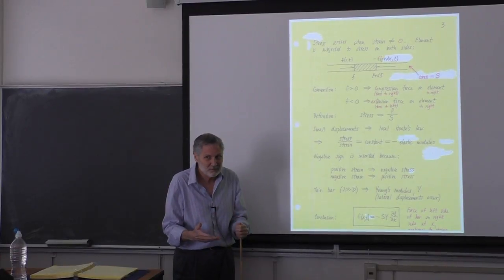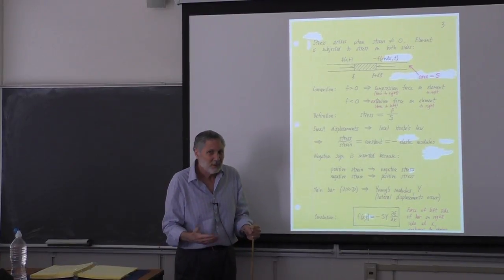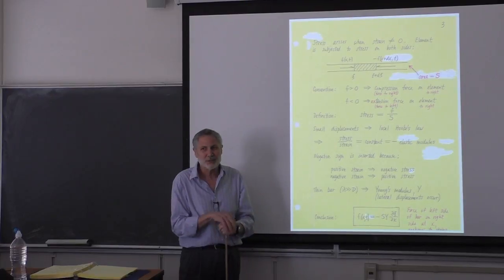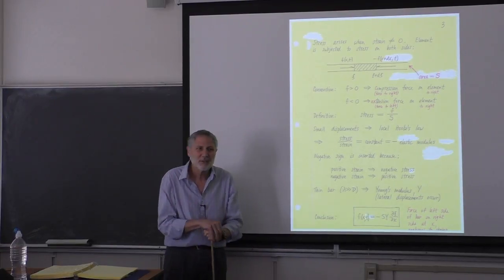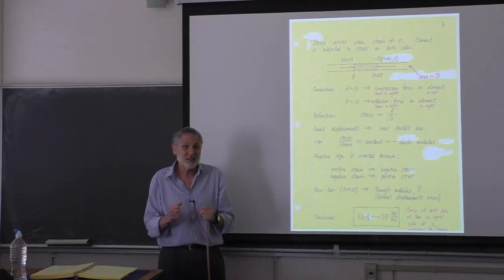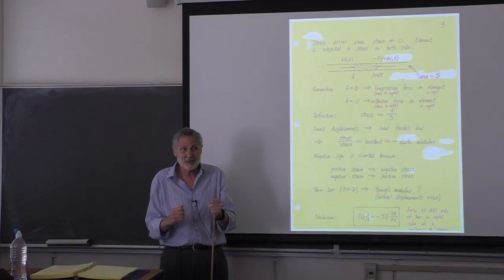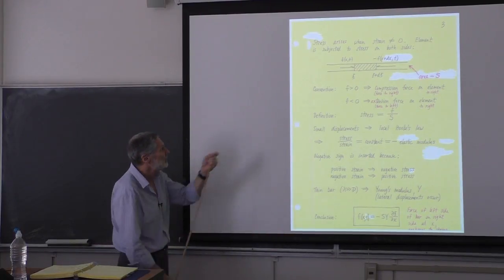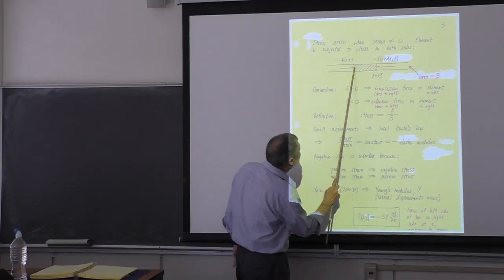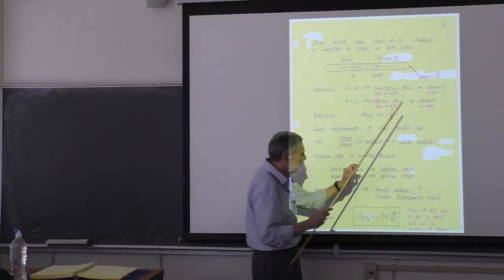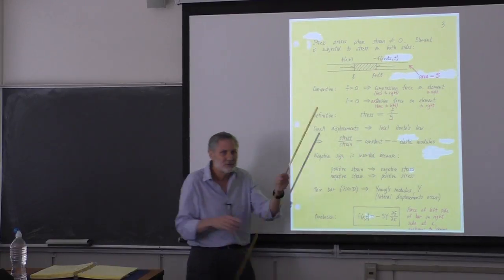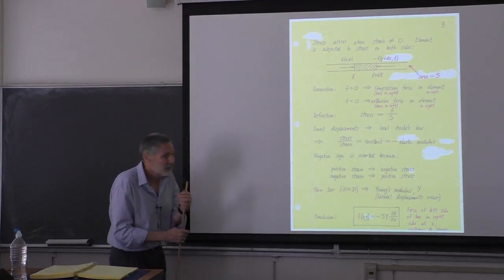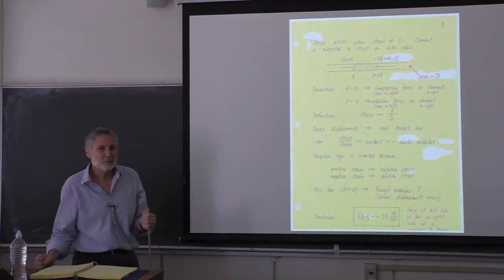A stress causes a strain. If I double the stress, what's going to happen to the strain? It's going to double — as long as we don't exceed the elastic limit of the material or fracture it. So there's a local Hooke's Law. Every small region: you look at the strain, you look at the stress — they're going to be proportional.